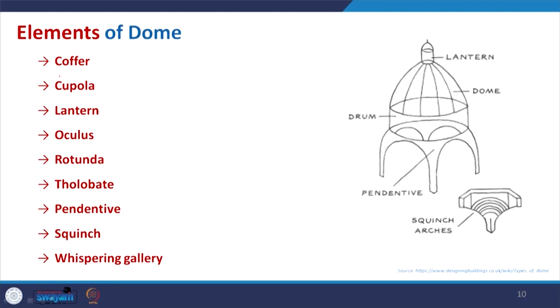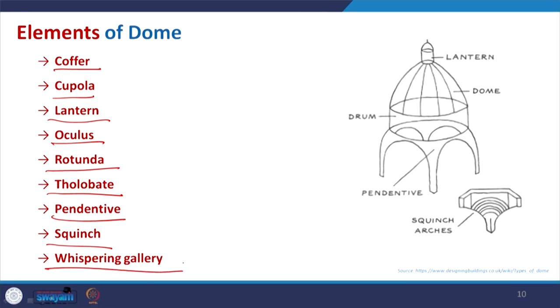Now, coming to the elements of a dome — some of these are not similar to vault or arch components. We have: coffer, cupola, lantern, oculus, rotunda, tholobat, pendentive, squinch, and whispering gallery. The names are a little difficult to remember, but looking at photos we will try to identify what exactly they are.